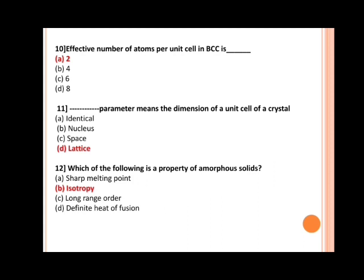Next, dash parameter means the dimension of a unit cell of a crystal. Options are: a) identical, b) nucleus, c) space, d) lattice. The correct answer is lattice. Next, which of the following is a property of amorphous solids? Options are: a) sharp melting point, b) isotropy, c) long range order, d) definite heat of fusion. The correct answer is b) isotropy.